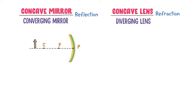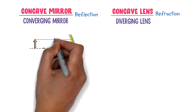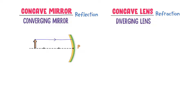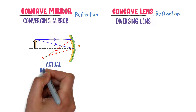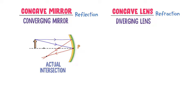Let me place this object here. Now consider that a light ray parallel to the principal axis hits the reflecting surface of a concave mirror. It is a mirror so it will reflect this incident ray through the focal point. Secondly, consider another incident ray that hits the mirror at its pole. Let it form a 35-degree angle with the principal axis. This incident ray is reflected at an equal angle of 35 degrees from the pole. We can observe that these both reflected rays intersect at this point.